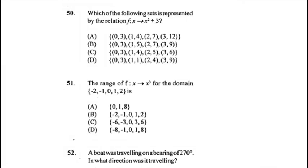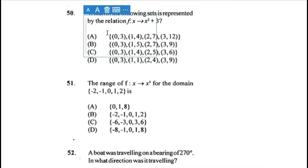Question 50: which set is represented by the relation x² + 3? The first number in each bracket is the x value and the second is the y value (f(x)). So: 0² + 3 = 3; 1² + 3 = 4; 2² + 3 = 7; 3² + 3 = 12. That confirms answer A.